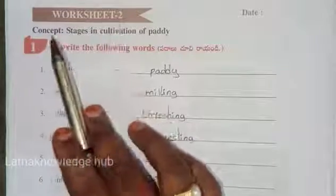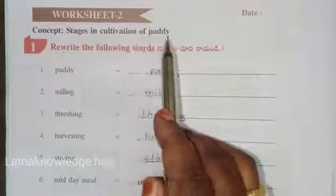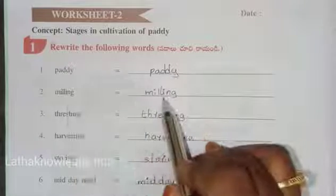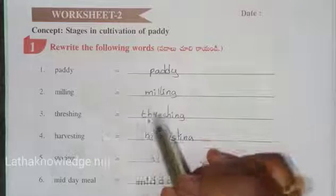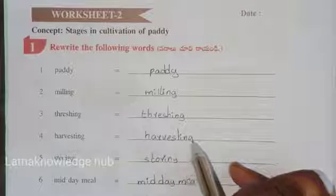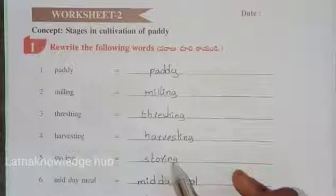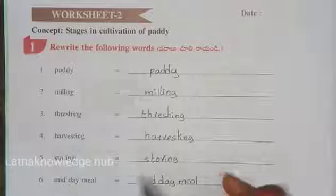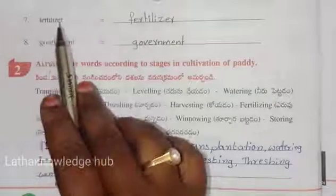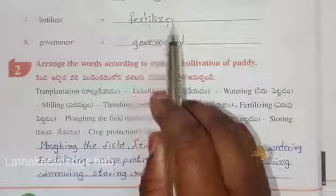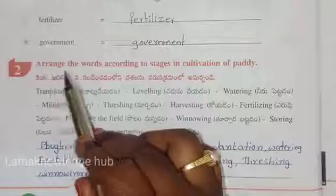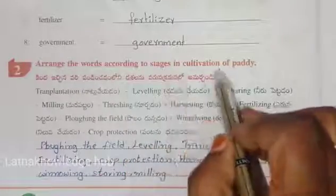Worksheet two, concept: stages in cultivation of paddy. Read the following words: Paddy - P-A-D-D-Y, paddy. Milling - M-I-L-L-I-N-G, milling. Threshing - T-H-R-E-S-H-I-N-G, threshing. Harvesting, harvesting. Storing - S-T-O-R-I-N-G, storing. Midday meal - M-I-D-D-A-Y M-E-A-L, midday meal. Fertilizer - F-E-R-T-I-L-I-Z-E-R, fertilizer. Government - G-O-V-E-R-N-M-E-N-T, government.